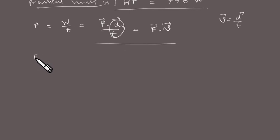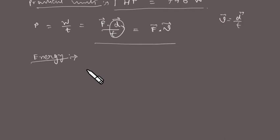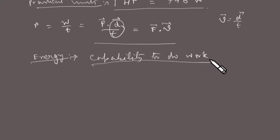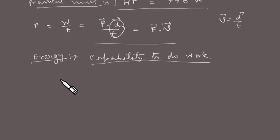Energy is the capability of a body to do work. Whenever a body has some energy stored in it, that body can do work. There are several forms of energy: electrical energy, light energy, sound energy, magnetic energy, mechanical energy, chemical energy, atomic energy, and so on.